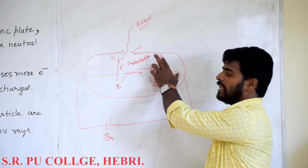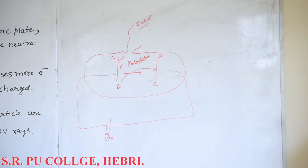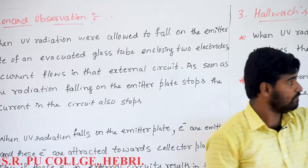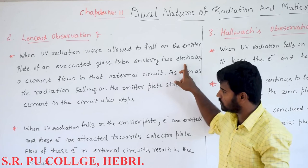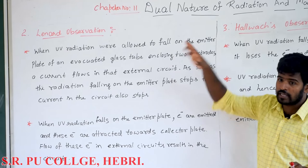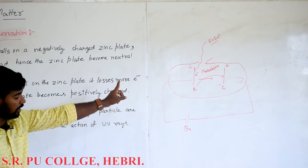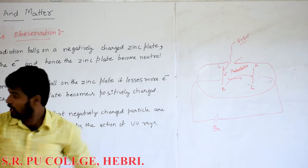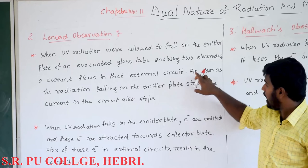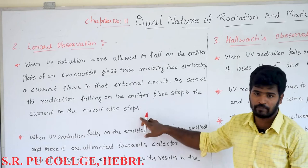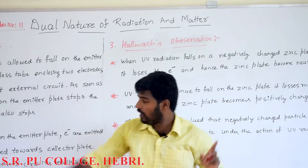When UV radiation was allowed to fall on the emitter plate of an evacuated glass tube enclosing two electrodes, a current flows in the external circuit. UV radiation causes emission of electrons from the emitter plate, and there is a flow of current. As soon as the radiation falling on the emitter plate stops, the current in the circuit also stops. That is the first observation made by Lenard.